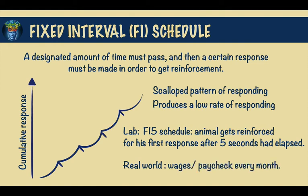A real-world example is that of wages. A salaried employee knows that he will receive his paycheck every week or every month. This schedule is likely to provide a level of performance that will meet the minimum, since workers have no incentive — working beyond the minimum does not result in more pay.